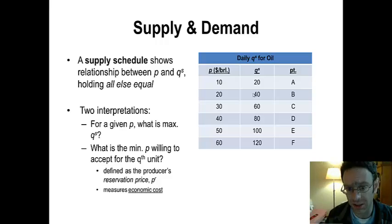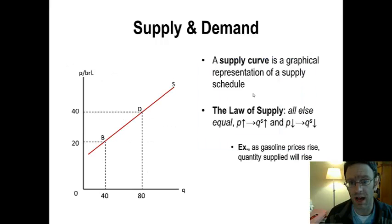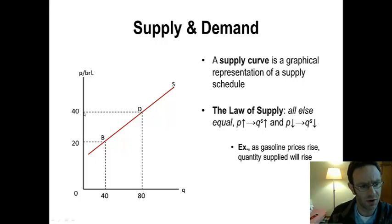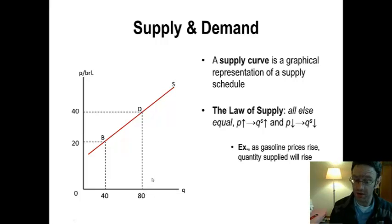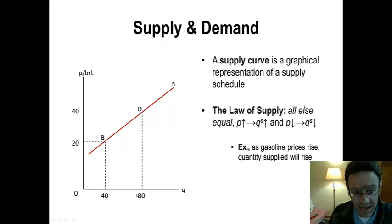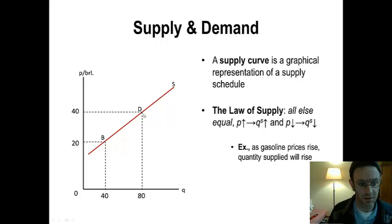Typically we're not going to use supply schedules — we're going to revert to supply curves. Here I've got an example showing point B and point D, and we can use those exact same two interpretations. The horizontal perspective starts at price and solves for the maximum quantity supplied: at a price of $40 a barrel, the maximum quantity supplied is 80 barrels. Or we can take a vertical perspective to get the reservation price for a seller — i.e., the economic cost of production. What is the cost of producing that 80th barrel? It is $40 a barrel.